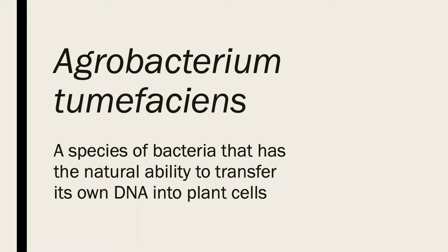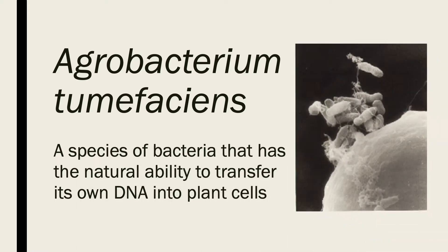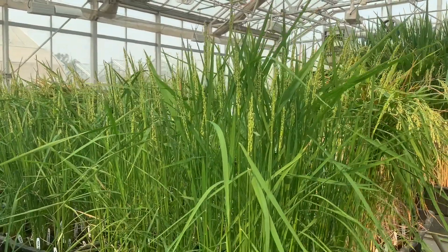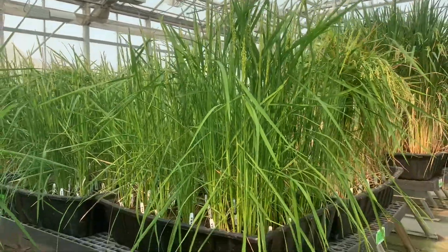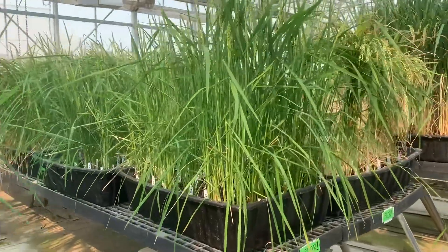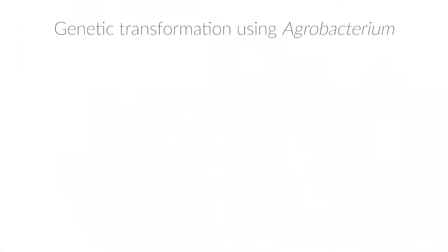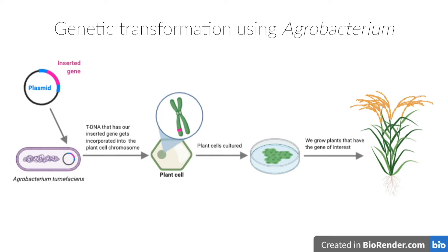The most common method used for rice transformation utilizes a bacterium called Agrobacterium tumefaciens. We use this bacterium to transform plants because Agrobacterium has the natural ability to transfer its own DNA into plants. We will make transgenic rice plants by integrating a piece of DNA called T-DNA, transferred from the bacteria, into the plant's genome.